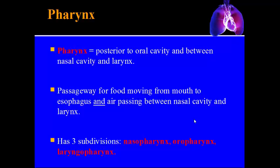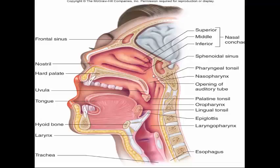Both food and air go through the pharynx — food goes down the esophagus, air goes down the trachea. The pharynx has three subdivisions named by location: the nasopharynx (behind the nose), the oropharynx (behind the mouth), and the laryngopharynx (near the larynx). These regions are visible in the anatomical diagram shown.